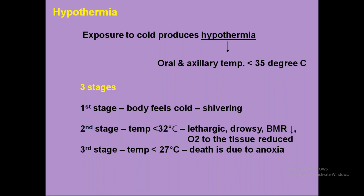The third stage of hypothermia occurs when the temperature falls below 27 degrees centigrade, at which point death can occur due to anoxia. Summary: hypothermia is a generalized effect of cold exposure, diagnosed at less than 35 degrees centigrade. First stage involves shivering; second involves lethargy and low BMR; third is the anoxia stage, which can lead to death.